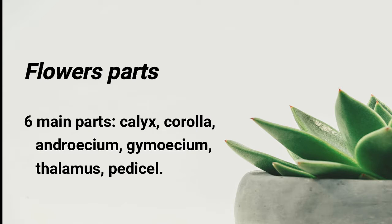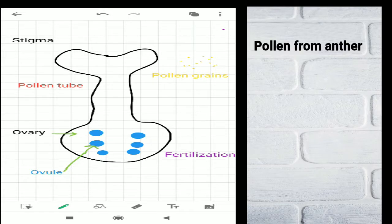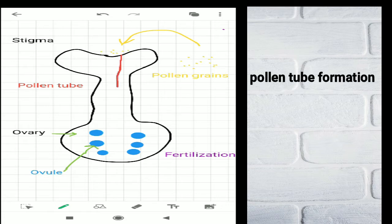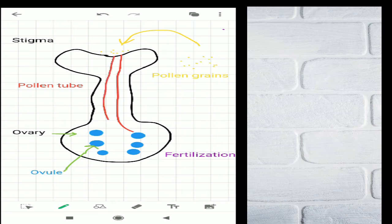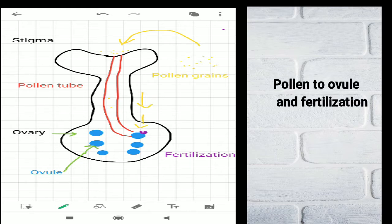A brief idea on the other topics, like how the fertilization process occurs. The pollen grains reach the stigma, and from the stigma a pollen tube is formed which reaches into the ovary where the ovule is found. The pollen grains travel to the ovule and there the fertilization process occurs.